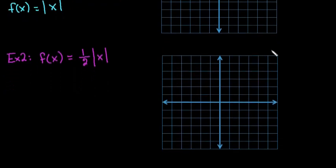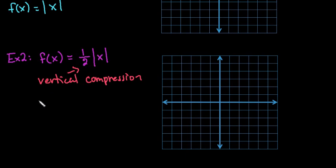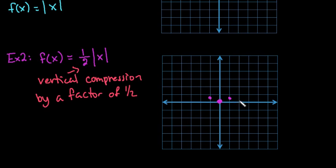For the second example, we're going to have a vertical compression by a factor of 1/2, so it's not going to go up as quickly — only half as much each time. When we plug in x=0, 0 times 1/2 is still 0. When x=1, 1 times 1/2 gives 1/2. When x=2, |2| times 1/2 gives 1. And at x=4, we'd only be up at 2. Notice the graph looks like it's been squished — compressed down.